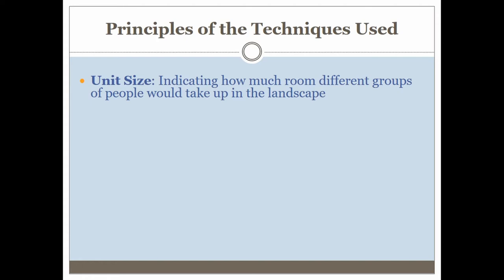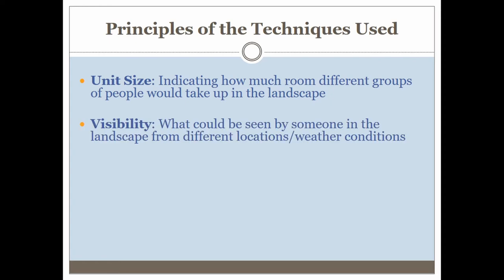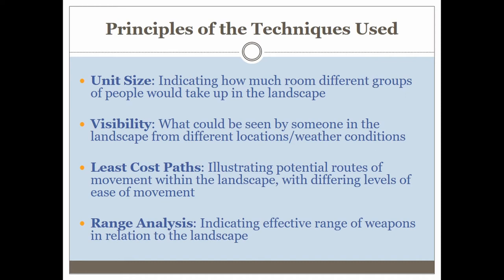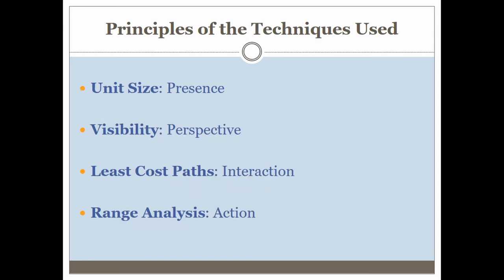Using these techniques: exactly how much room do people take up in the landscape? Literally, if you have 10,000 people in a field, how big is that? The answer is not very big compared to a battlefield. Also, what could be seen by someone within this landscape — if a person was said to be standing somewhere historically, could they actually have seen the battlefield, or would they have had to be on horseback? And illustrating potential routes of movement through the landscape, and indicating the effective range of weapons — exactly how close would you have to get to shoot someone effectively with an arrow or a bullet?